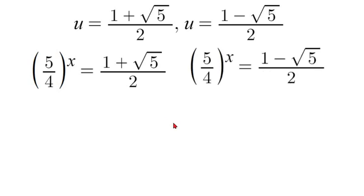Now something we need to recognize right off the bat is that the right side of this equation is going to give us a negative value and when it comes to exponents there is no exponential value we could put in here that would make 5 over 4 negative. So therefore there is no real solution to this answer. So that means our only possible answer is 5 over 4 to the power of x is equal to 1 plus square root of 5 over 2.